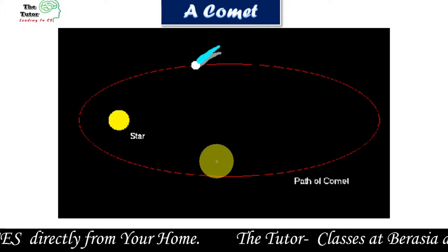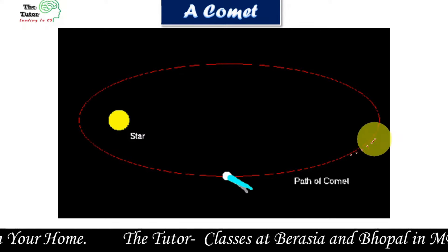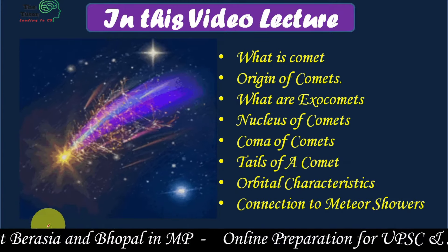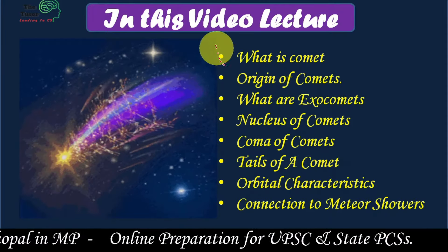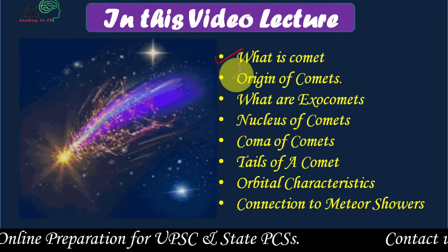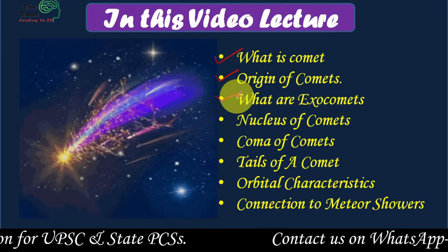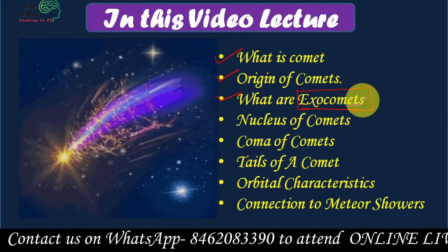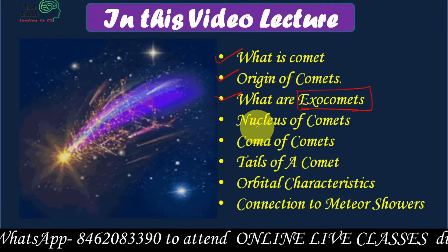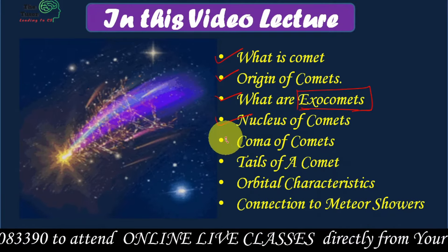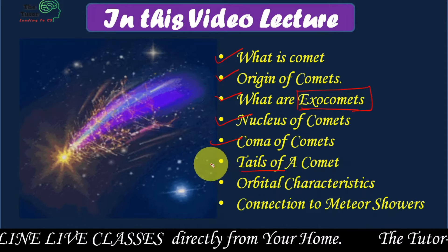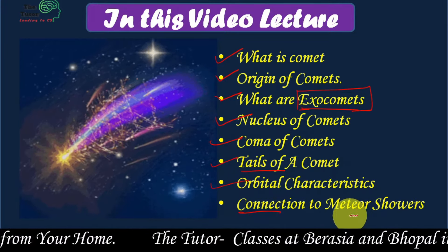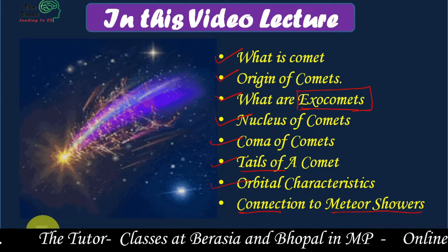Generally we know about one tail of a comet but they have two. They have a very elongated elliptical path on which they orbit around the sun. In this short video lecture we shall learn about what is a comet, how does it originate, what are exocomets — comets that do not belong to our solar system but come into the solar system and after many years go away. We will also cover the nucleus, the coma, the tails, the orbital characteristics, and finally the connection between a comet and a meteor shower.